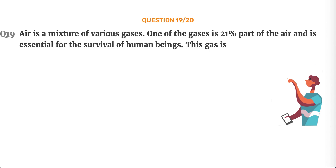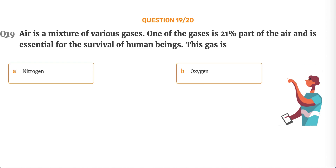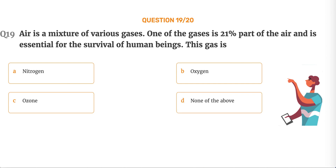Question number 19. Air is a mixture of various gases. One of the gases is 21% part of the air and is essential for the survival of human beings. This gas is: Option A, Nitrogen. Option B, Oxygen. Option C, Ozone. Option D, None of the above.